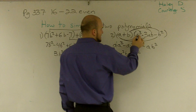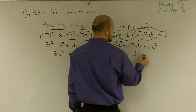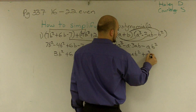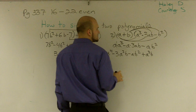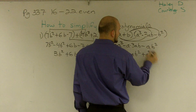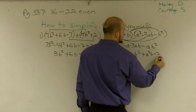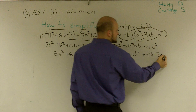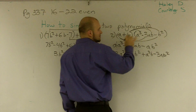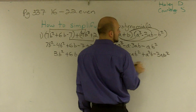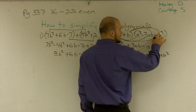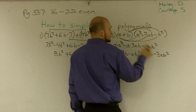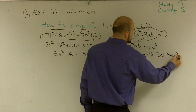Then I multiply b times a cubed, which is going to be a positive a cubed b. b times negative 3ab is going to be negative 3ab squared. b times b is b squared. And b times negative b squared — remember I add my exponents — is going to be negative b cubed.